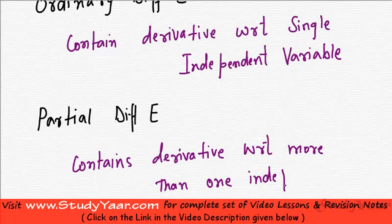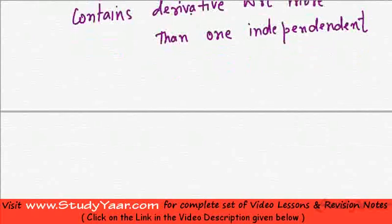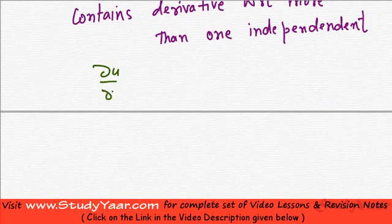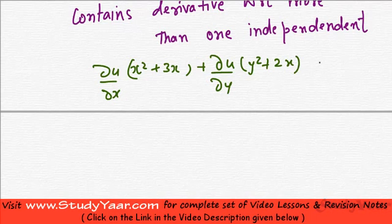This is the meaning of a partial differential equation. Let us take an example. If you have an equation something like: ∂u/∂x · (x² + 3x) + ∂u/∂y · (y² + 2x) = u, then this is a partial differential equation. Why is it a partial differential equation? Because it contains partial derivatives with respect to more than one independent variable.